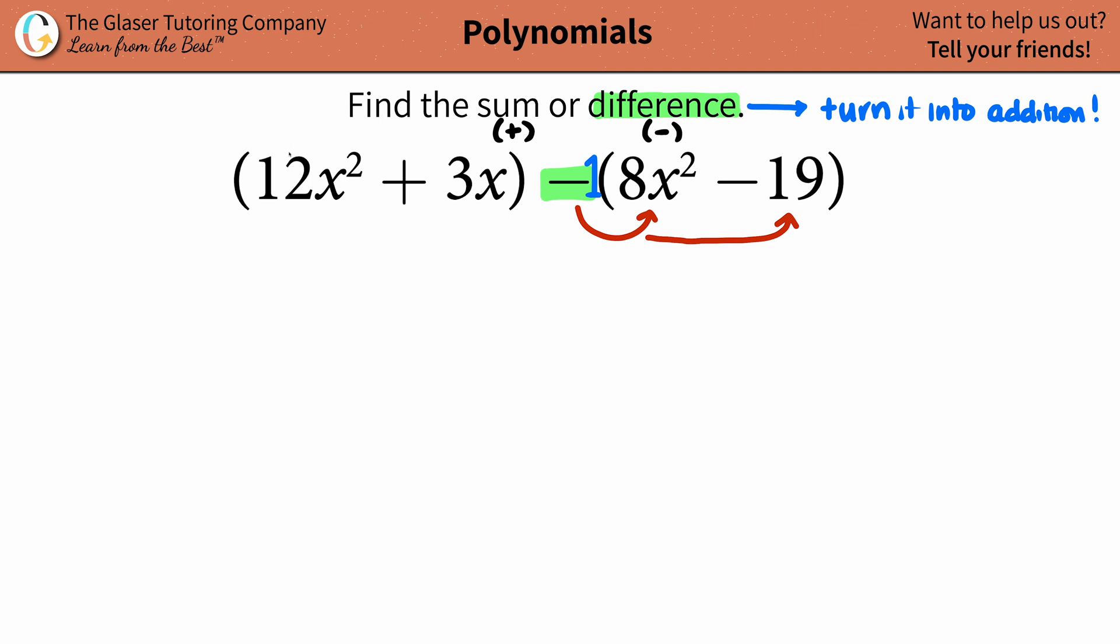Now, when we start doing this, we don't really have to use the parentheses anymore. So what I would do is I would just take them down. So we're not doing anything with the first parentheses. 12x² + 3x, that just stays. But I do notice that I have an x² value and an x. Now, with adding and subtracting polynomials, these are two different terms. So don't be tempted to add these two values together.